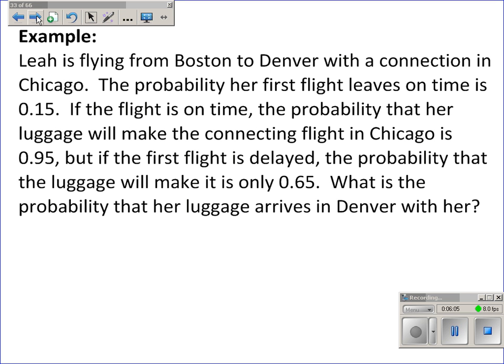Now, these questions are like the ones we'll see in statistics, not like the ones dealing with cards. But notice how the probability that her luggage makes it is dependent upon whether her first flight leaves on time or not. So, the first node will be the first flight leaving on time or not. So, on time will be 0.15 and delayed will be the other 0.85.